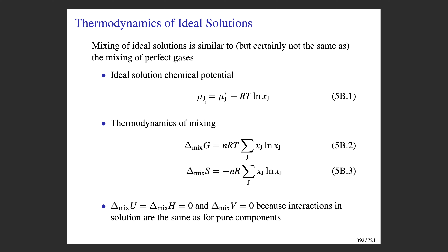Here we have the chemical potential μ_J, which is the chemical potential of component J in solution. In an ideal solution, this is referenced against the chemical potential of pure component J—that's what the star denotes. Then there's a correction factor involving the natural log of the mole fraction of component J in solution. This is our approach for calculating the chemical potential of component J in an ideal solution.